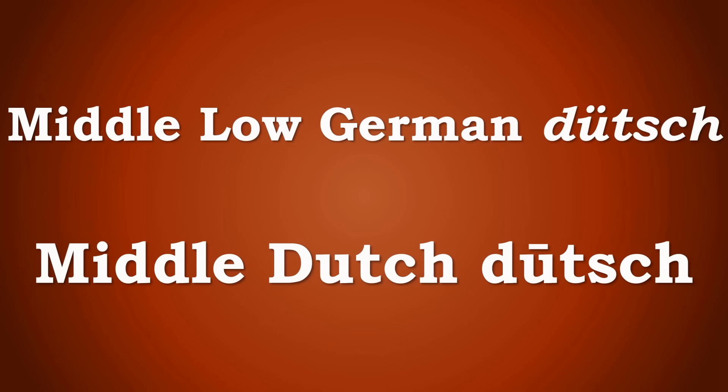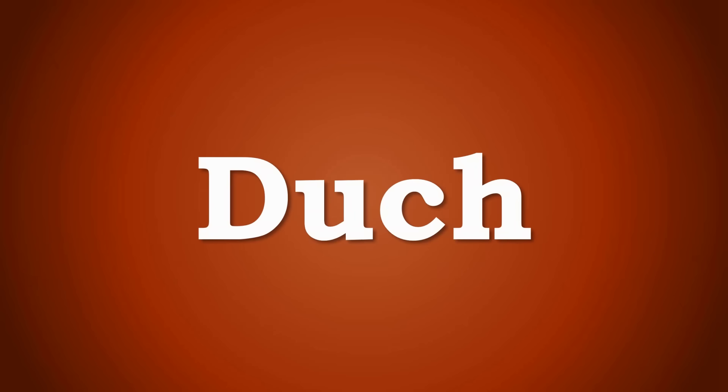It seems then that Dutch itself was a loan word, either from Middle Low German or from Middle Dutch, which then came into Middle English as Dutch, later on getting the added 't', although it was probably already pronounced in the same way.